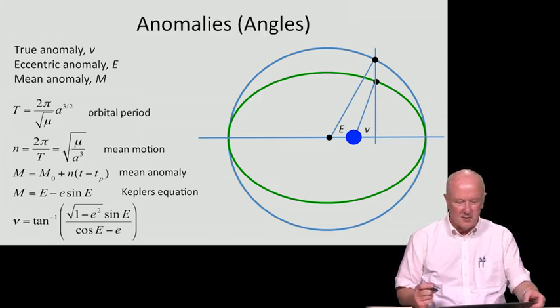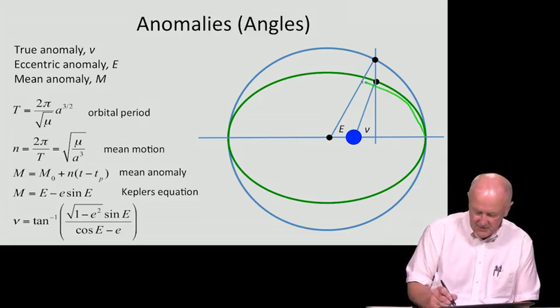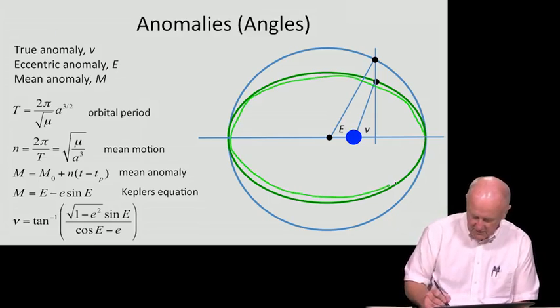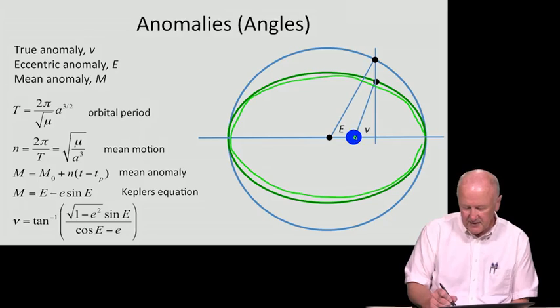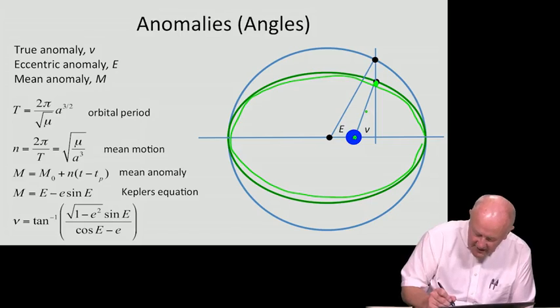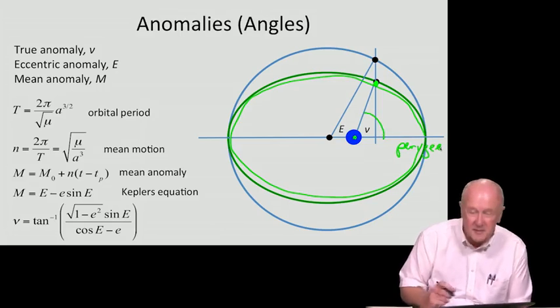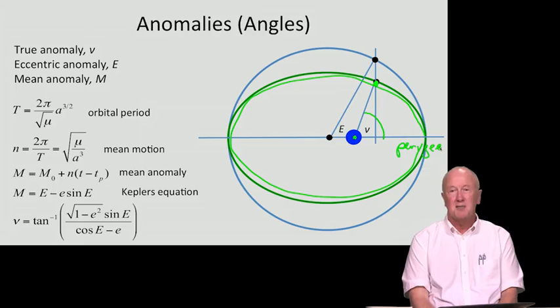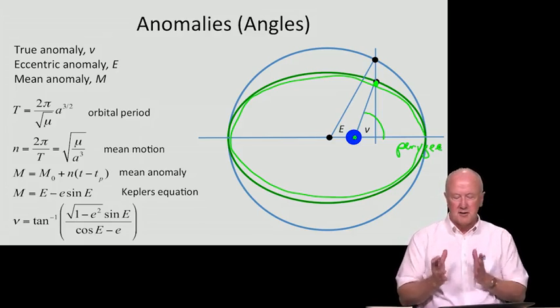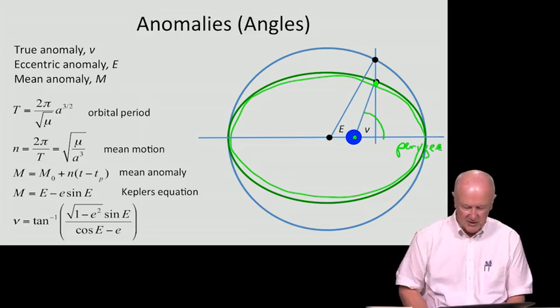The true anomaly is the familiar one. We've already talked about that. Here I have drawn an orbit, a nice elliptical orbit, and here's the Earth. Here's the satellite up here, and the angle made by the satellite past perigee is the true anomaly. It's certainly a very physical one with this simple drawing. There's no ambiguity about what that angle is, so it's very visual that way.